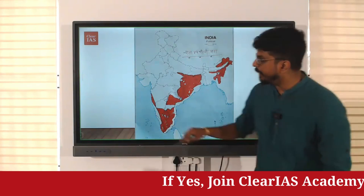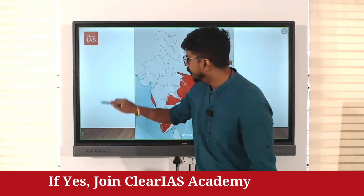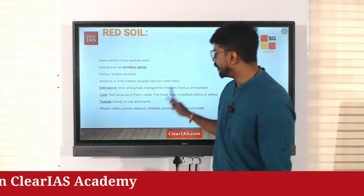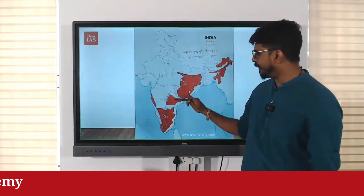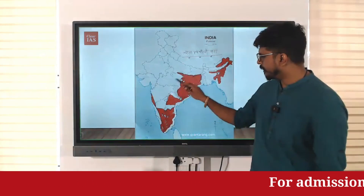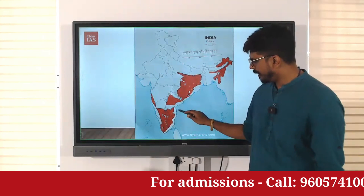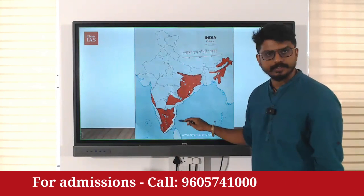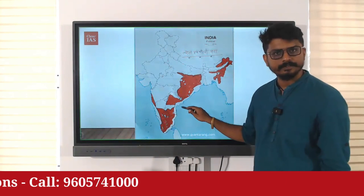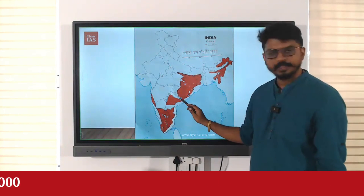So, red soil — the two major regions of red soil would be this region here and this region. Clear?